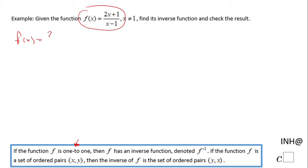The first step for finding the inverse function is to replace f(x) with y. Then, if you take a look here, the ordered pair (x, y) belongs to the original function f.